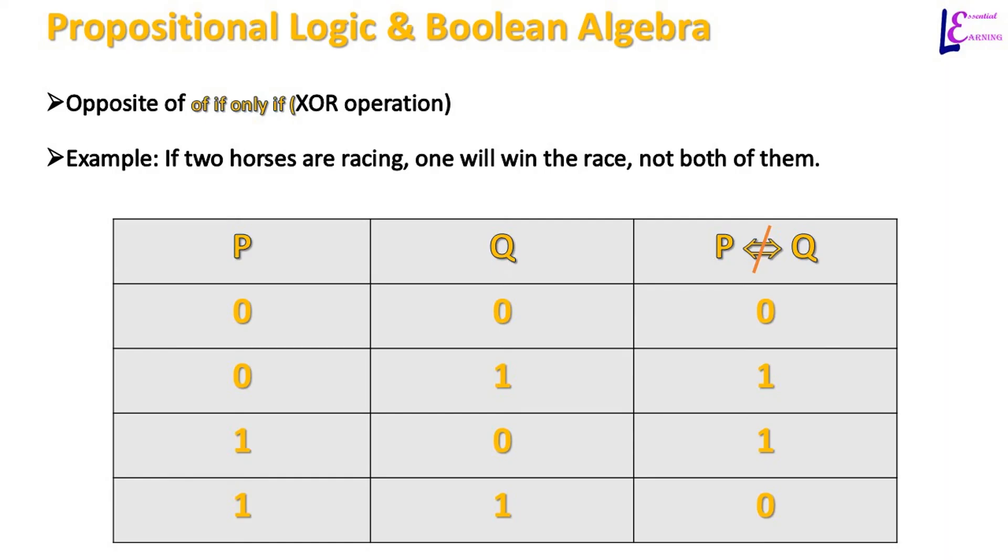Opposite of if and only if statement is also important in boolean algebra. If we apply NOT operator to if and only if or bi-directional implication, we will get an operation called exclusive or in boolean algebra. Following truth table and proposition shows the concept: if two horses are racing, one will win the race, not both of them. Bi-directional implication is also known as even function whereas exclusive or is also known as odd function.